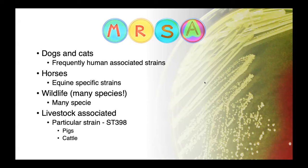In horses, we tend to see equine-specific strains of MRSA which don't occur generally in people except for those who have contact with horses. In wildlife — fish, reptiles, marine mammals, mammals, birds, et cetera — MRSA has been identified. And then finally, livestock-associated MRSA, particularly strain sequence type 398, which is notorious for its presence in pigs and cattle.